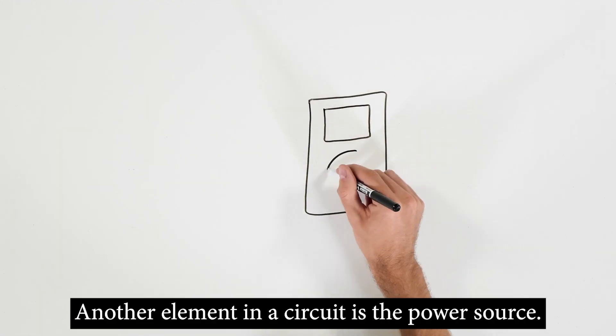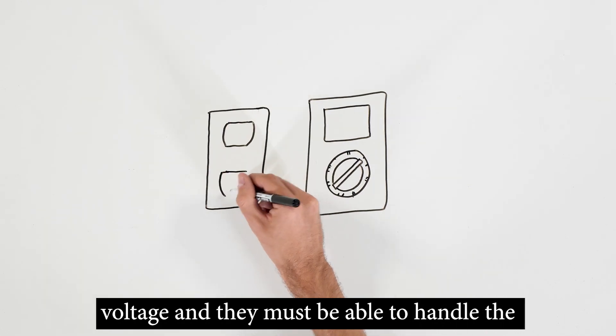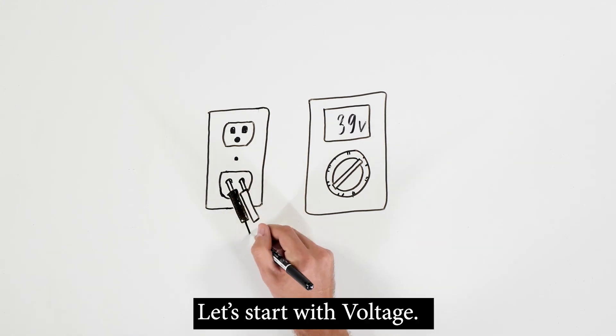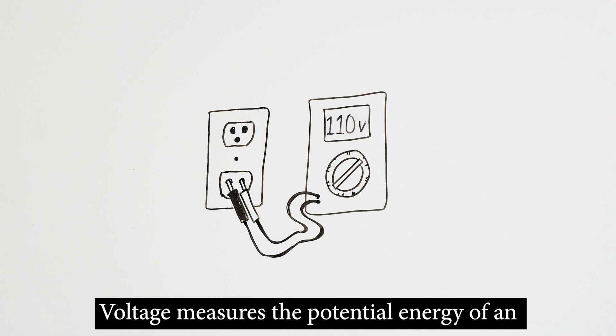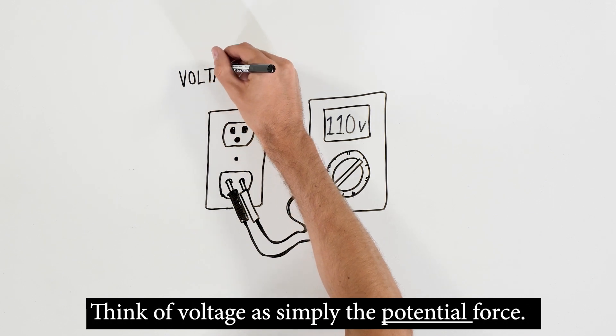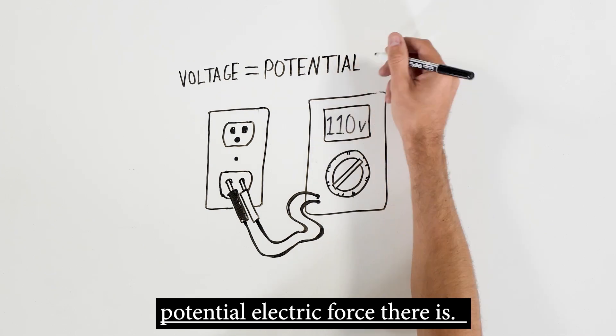Another element in a circuit is the power source. Power sources provide the necessary operating voltage, and they must be able to handle the current flow the electrified hardware requires. Let's start with voltage. Voltage measures the potential energy of an electric field to cause an electric current in an electrical conductor. Think of voltage as simply the potential force. The higher the voltage, the more potential electric force there is.